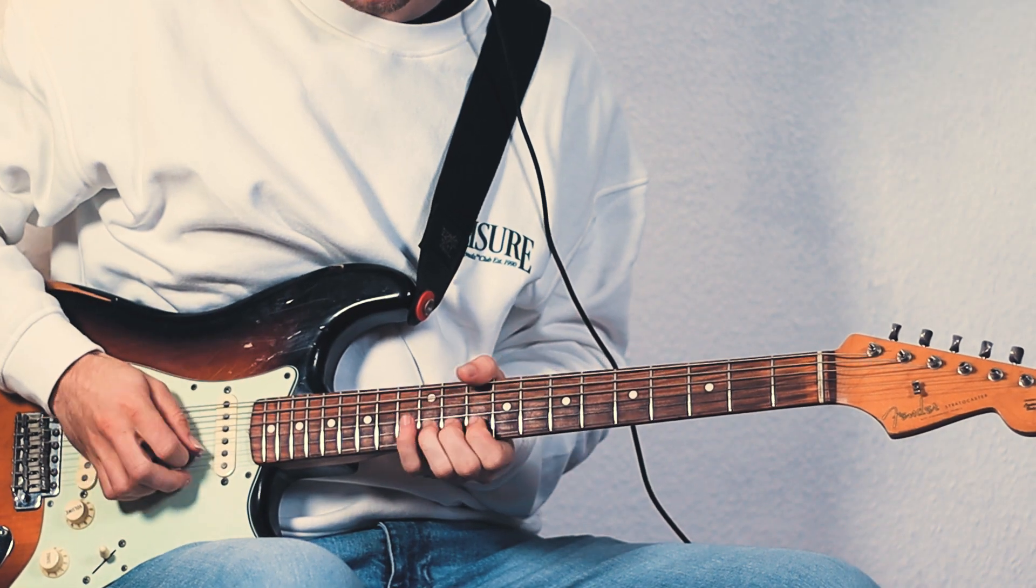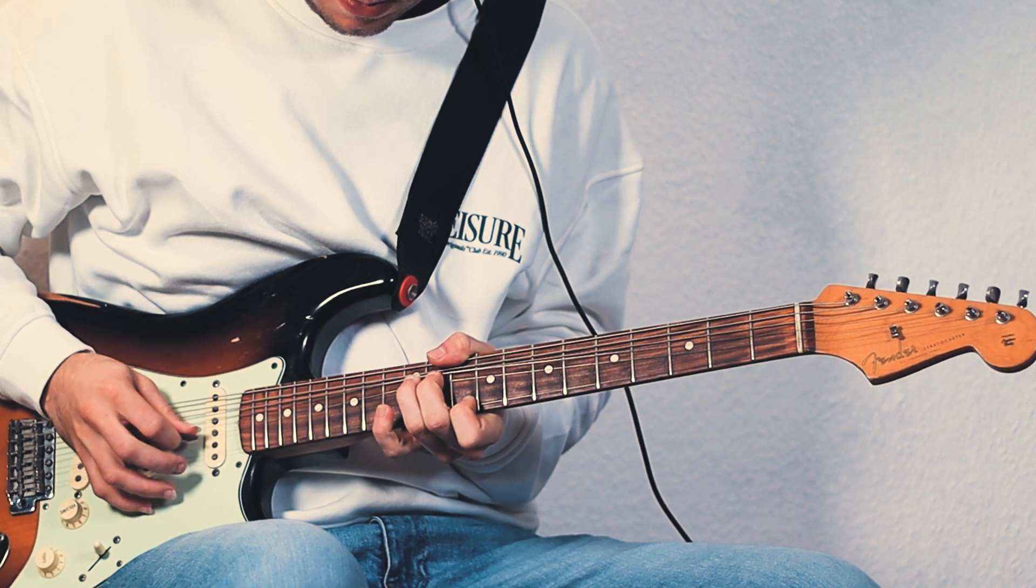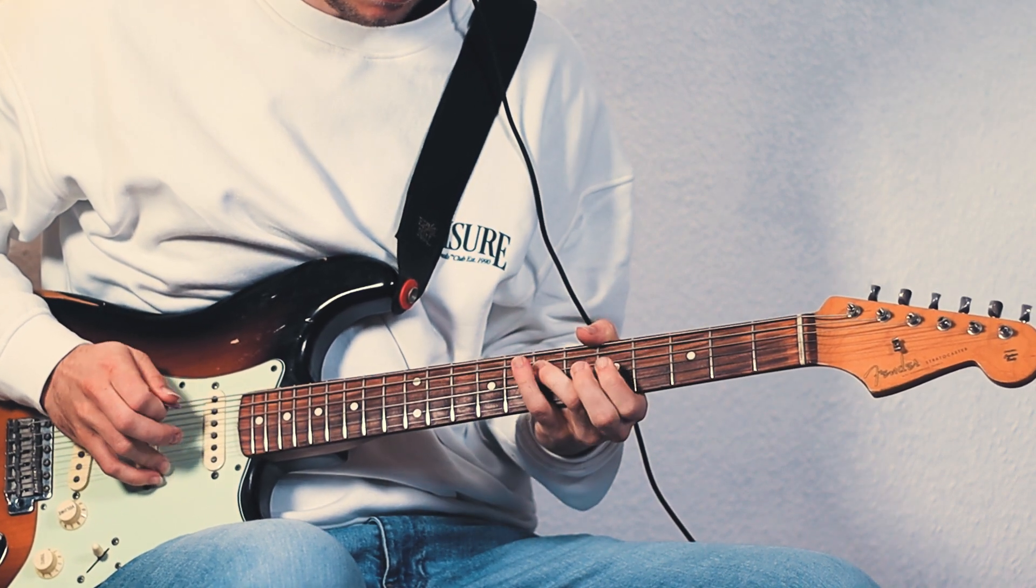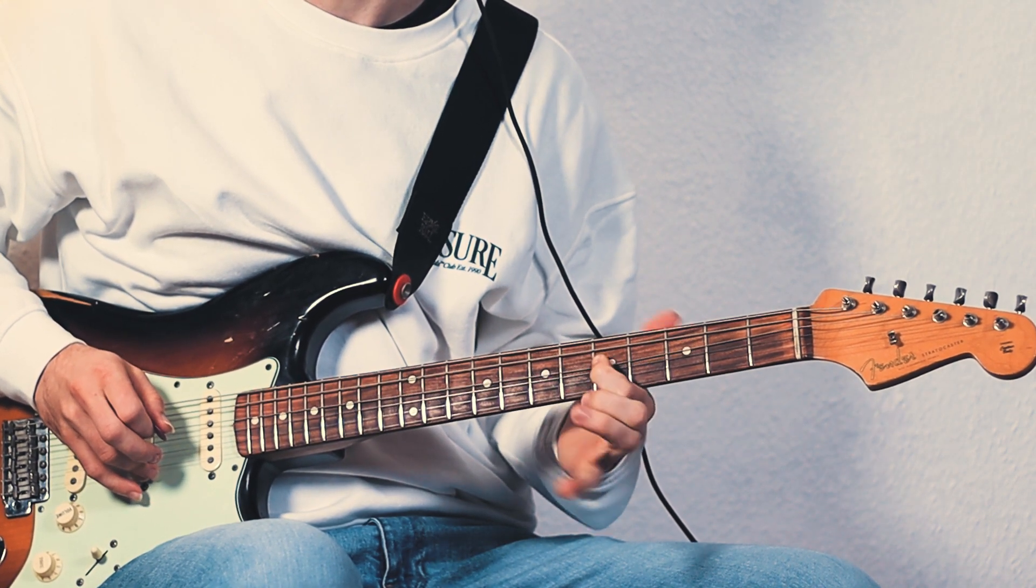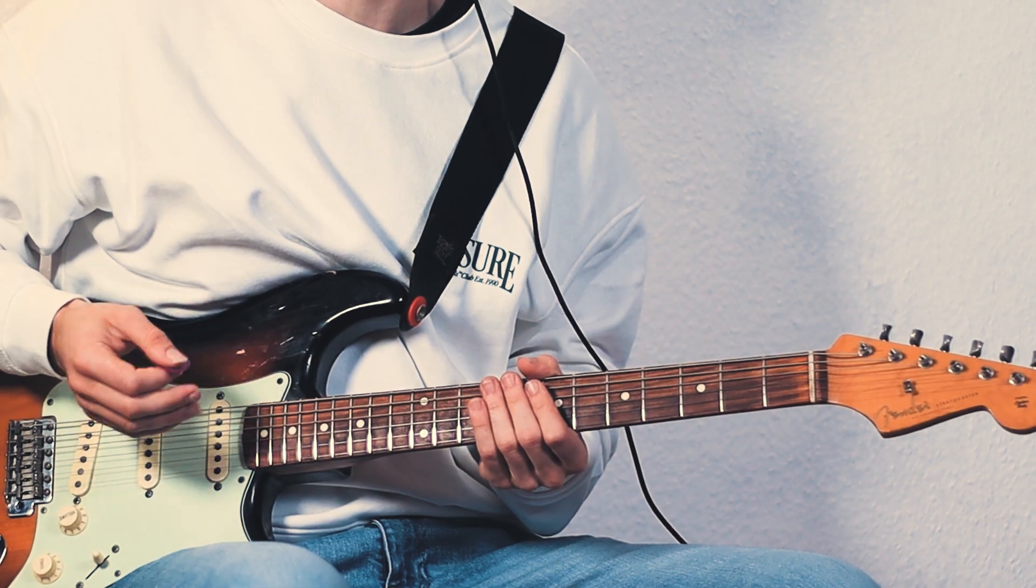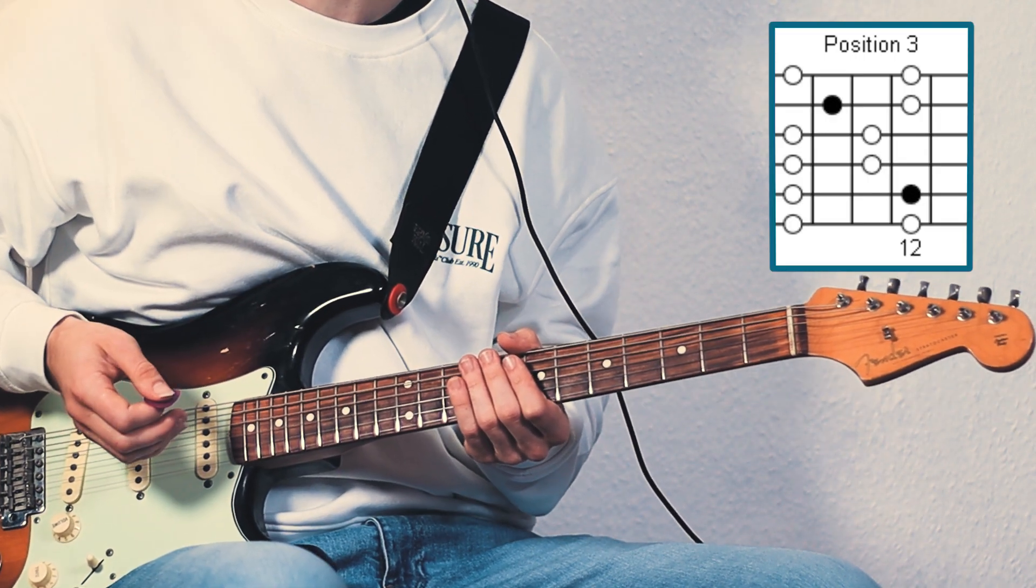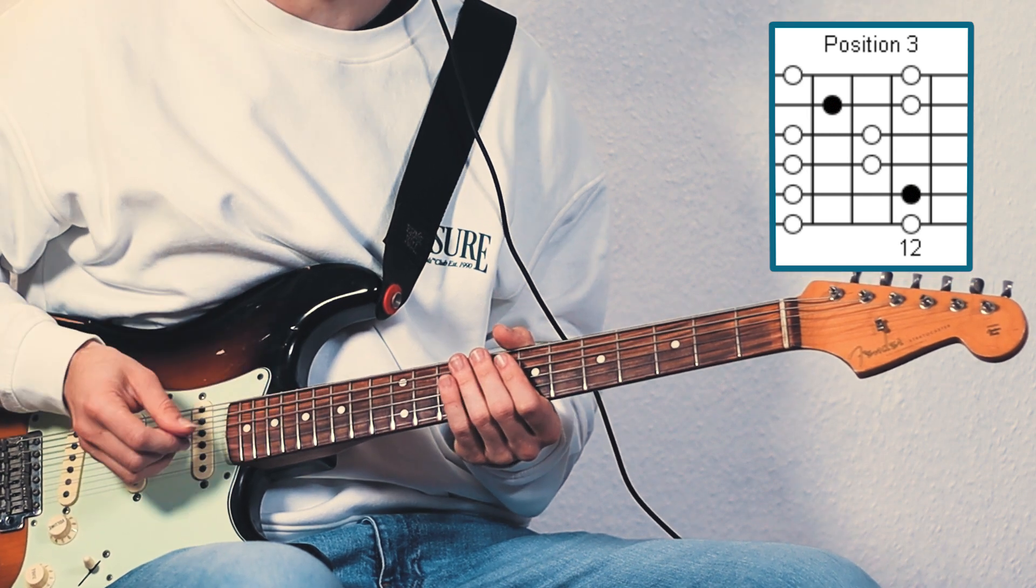Alright, now first of all very slowly. Now we are in the key of A and we are at the third position of the major pentatonic of A, the so-called BB King box.